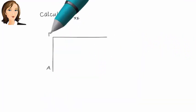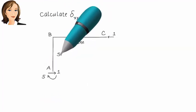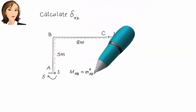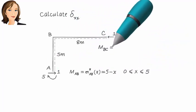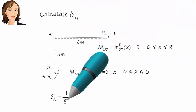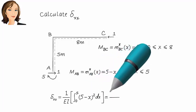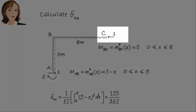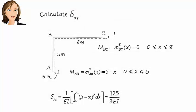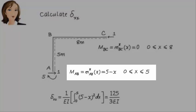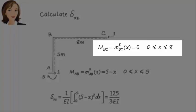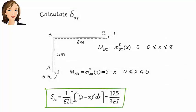First, let's determine delta xx. This is horizontal displacement at C due to a horizontal unit load applied at C. Since the unit load and the virtual unit load are applied at the same point and in the same direction, M and M star are going to be the same. Here is the moment equation for member AB, and here is the moment equation for BC. The integral of M M star gives us 125 divided by 3 EI.